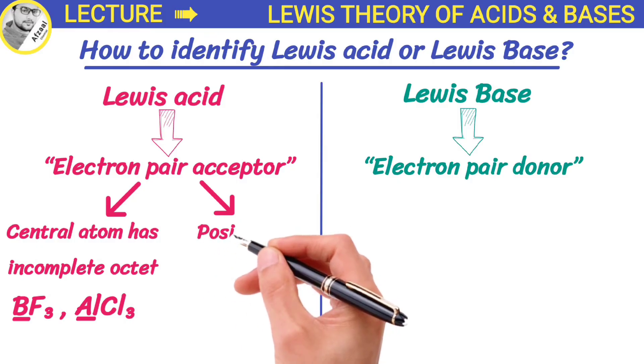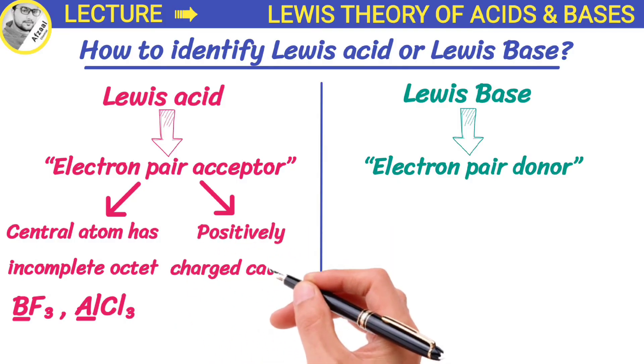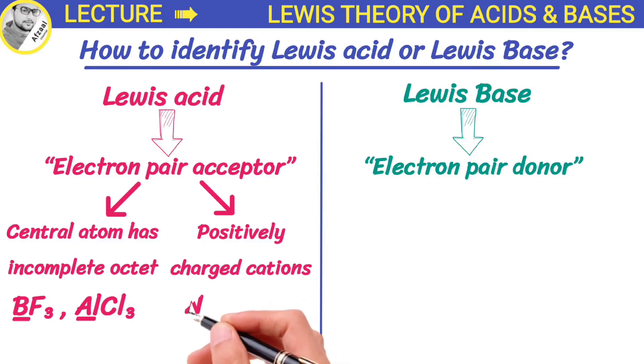Positively charged cations can act as Lewis acids because they are deficient in electrons. For example, cations such as sodium ions and potassium ions have very little tendency to accept electrons, while the cations like hydrogen and silver ions have a greater electron accepting tendency, therefore act as Lewis acids.